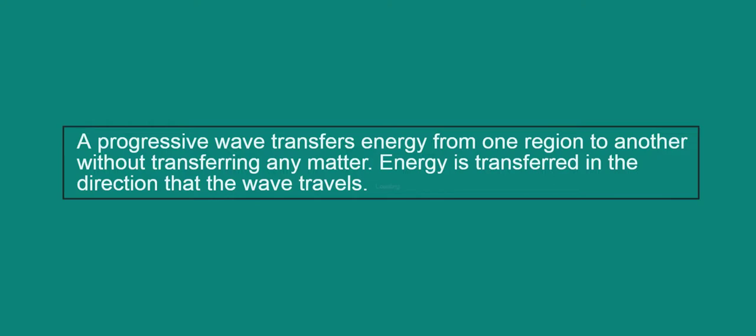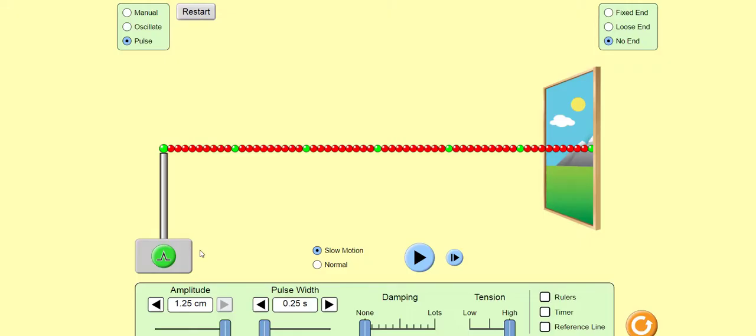The idea that progressive waves transfer energy without transferring matter can be nicely appreciated with the following FET simulation, which we will be using often throughout this playlist on waves. In this simulation, we can create progressive waves on a string. Pressing the green button will cause the grey rod to move up and down, thereby creating a progressive wave, like so.